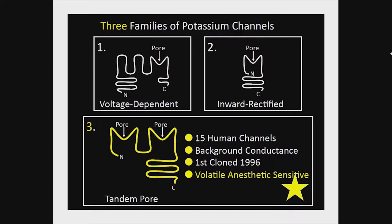Just as a reminder, there are three families of potassium channels: voltage-dependent, inward-rectified, and the tandem-pore channel — the family I work on. They're called tandem-pore because there are two pore-lining amino acid signature sequences in tandem on each subunit. Two subunits come together to form a functional channel — homodimers or heterodimers — and there are 15 human subunits identified. They mediate a background potassium conductance, contributing to resting membrane potential and controlling excitability. I became interested in them because several are activated by volatile anesthetics, making them potential targets for inhaled anesthetics.